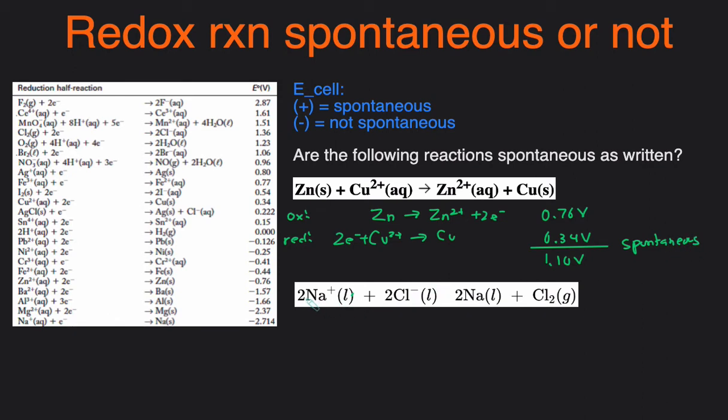Then the next one. So the second technique is to use the equation E cell equals E cathode minus E anode. And cathode is where the reduction occurs. Anode is where oxidation occurs. So we can just write E of reduction minus E of oxidation.